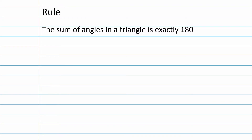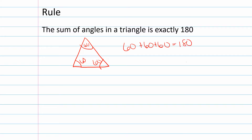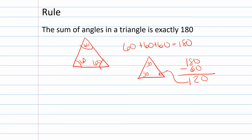We have another rule: the sum of angles in a triangle is exactly 180 degrees. If a triangle has angles 60, 60, and 60, that equals 180. If you're given only two angles, you take 180 minus the sum of the other two to find the missing angle — for example, 180 minus 60 gives a missing angle of 120 degrees.